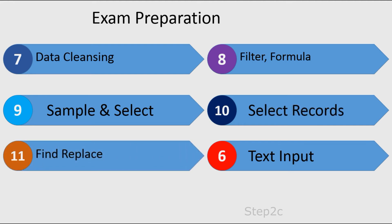The Find Replace tool is similar to VLOOKUP in Excel — if you want to replace some data with other data, you use Find Replace. You should know its basic configuration. There is also the Join tool, used to combine data, and the Union tool. Using Join and Union you can combine data either horizontally or vertically, and you should know all their configurations as you will get many questions from these two tools.